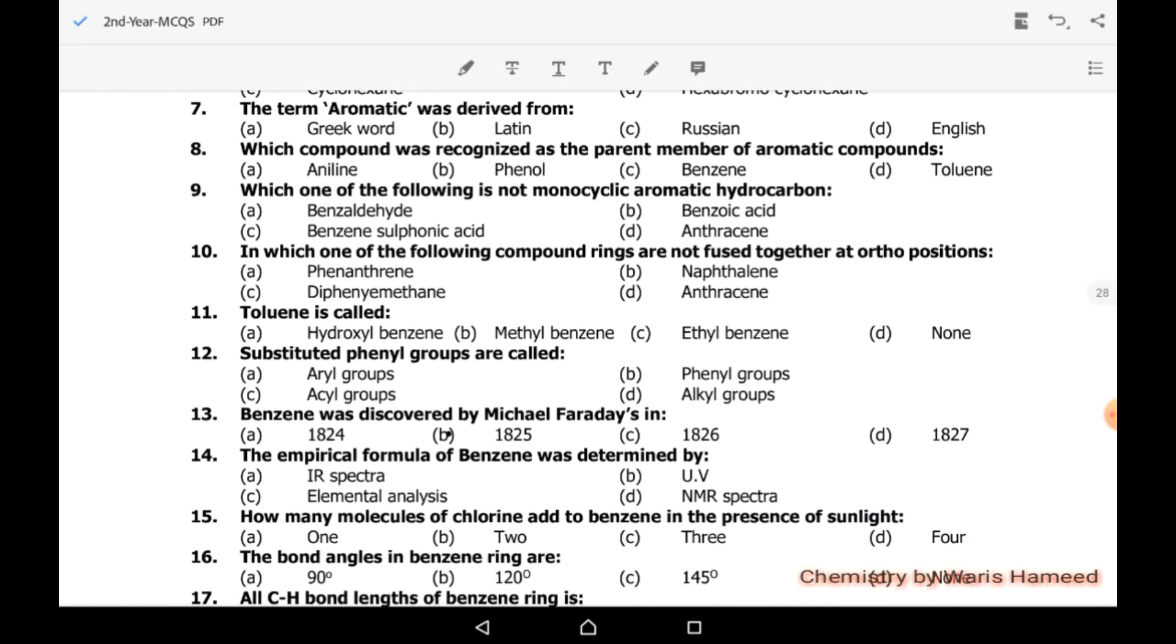The term aromatic was derived from Greek word. Which compound was recognized as the parent member of aromatic compounds? It's benzene. Aromatic compounds have minimum just one benzene ring, and they may have multiple benzene rings, but the condition is that they should have at least one benzene ring.